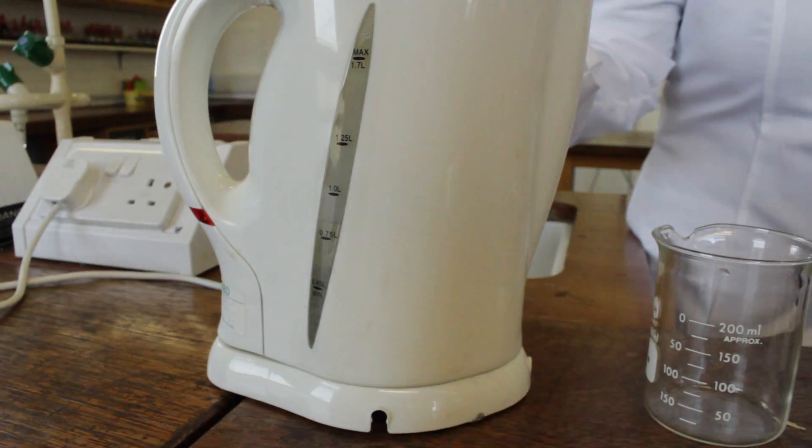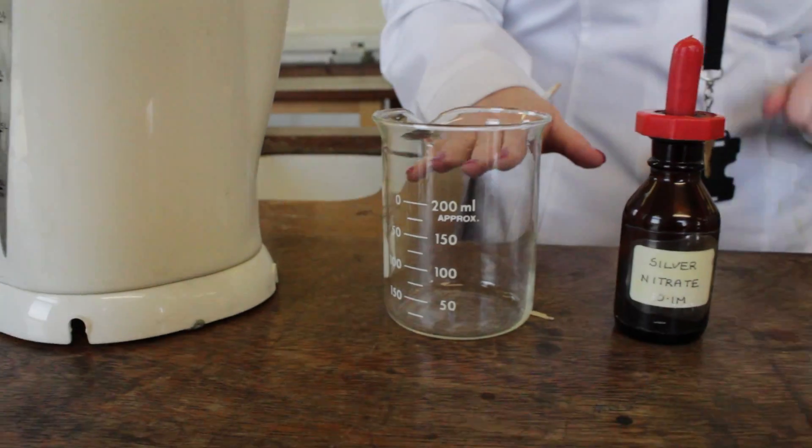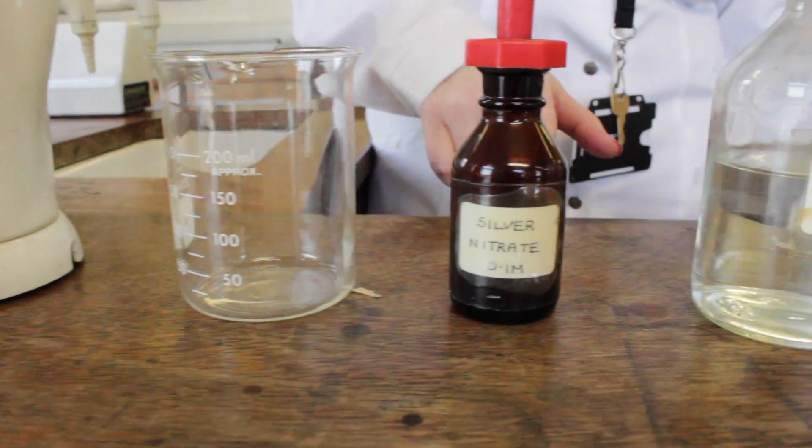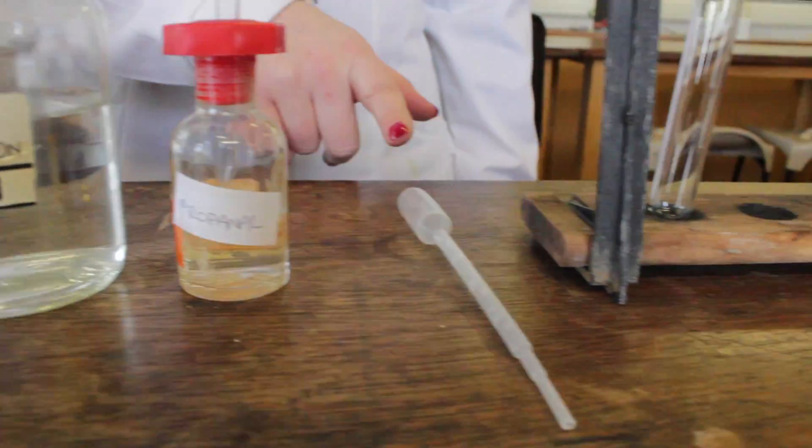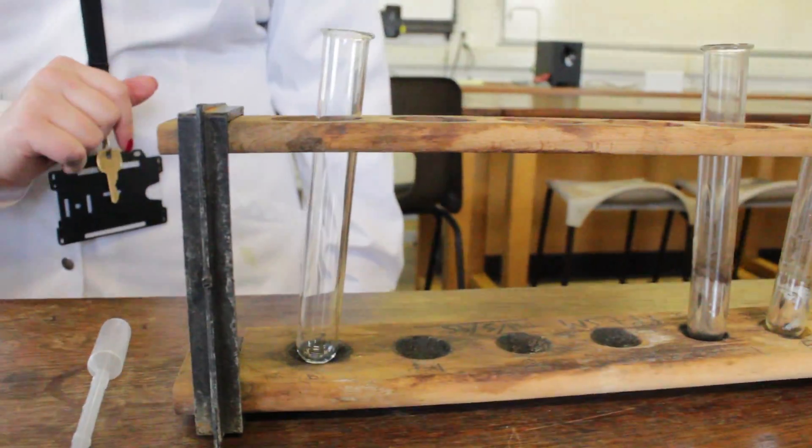We have some hot water, a beaker, silver nitrate solution, ammonia, propanol, a pipette, and a clean test tube.